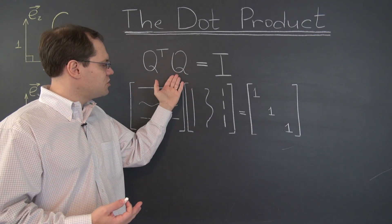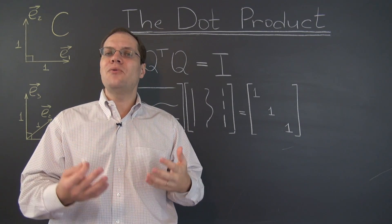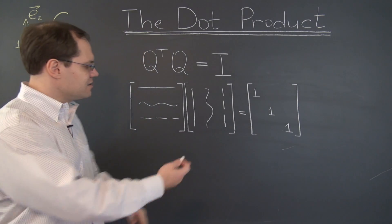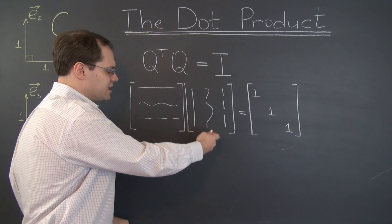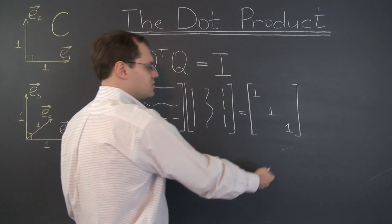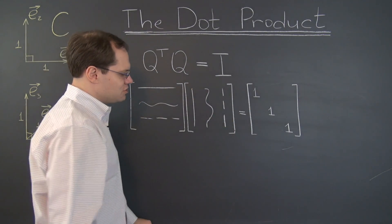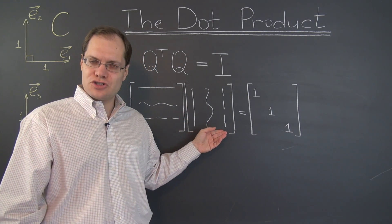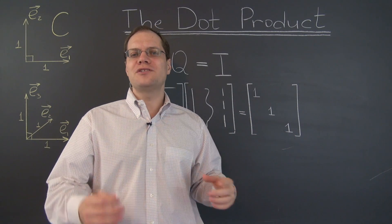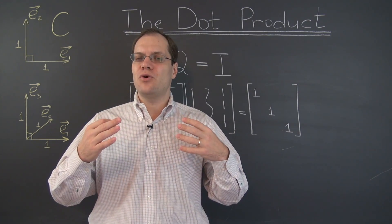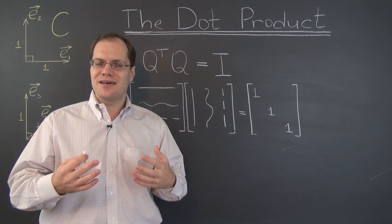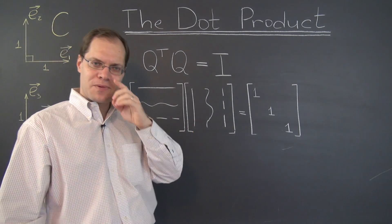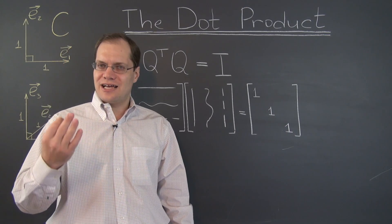We previously didn't understand why the relationship Q-transpose Q = I would lead to the term 'orthogonal.' Now we understand: this relationship implies that the columns of Q are all pairwise orthonormal. That somewhat justifies the name orthogonal — but of course it's actually a bad name, because the columns aren't just orthogonal, they're orthonormal. The matrix should really have been called orthonormal. That's a big oops in naming, but we're stuck with the name orthogonal.